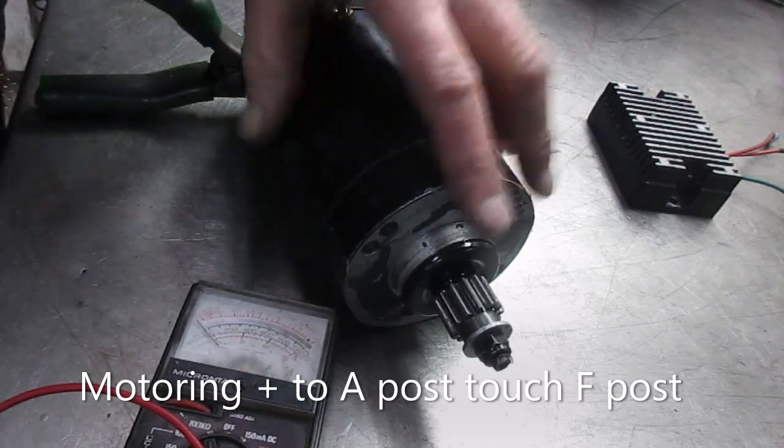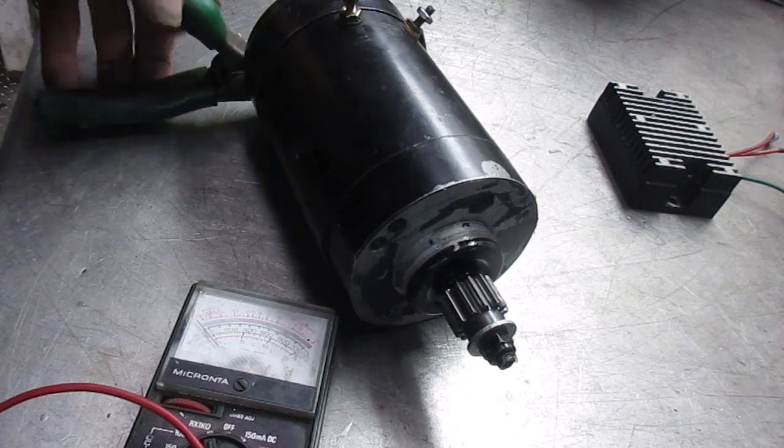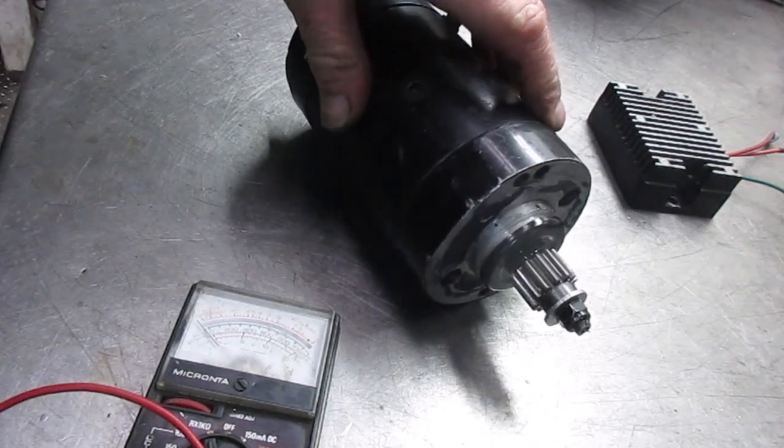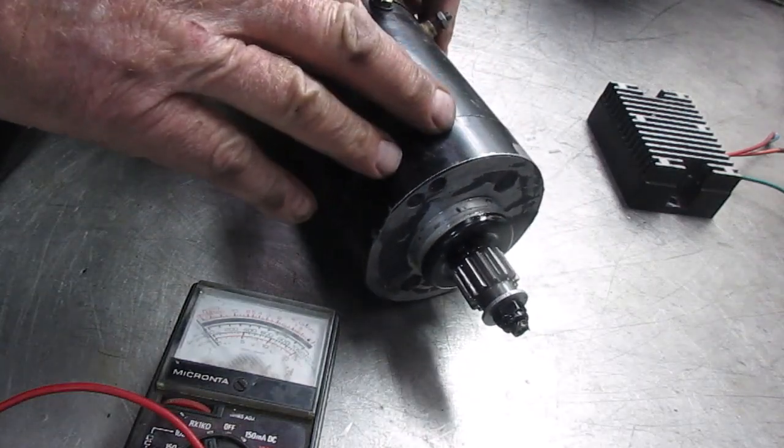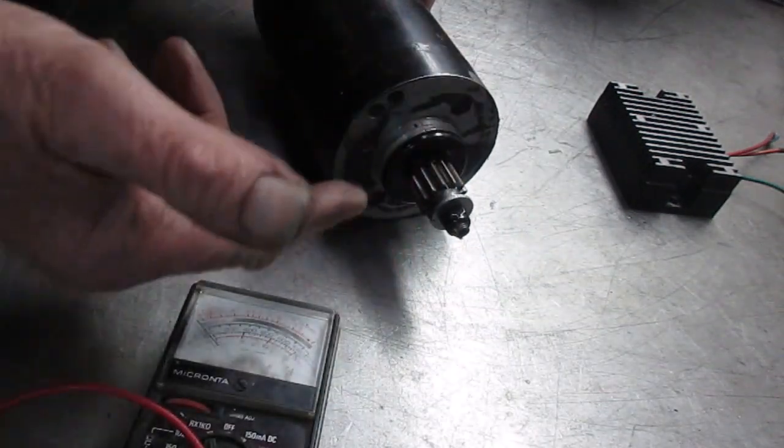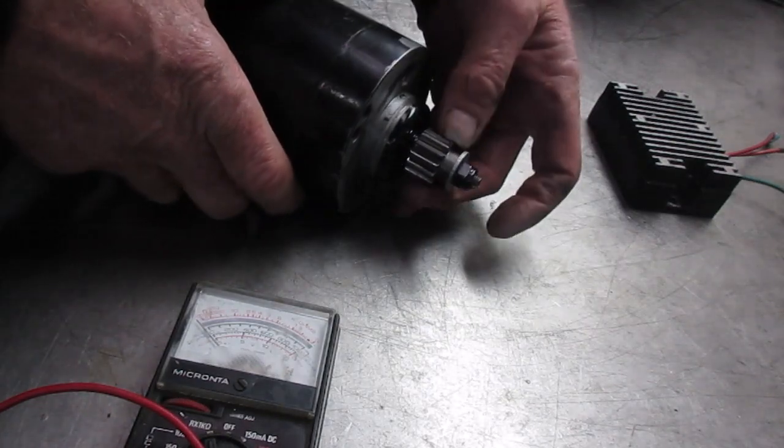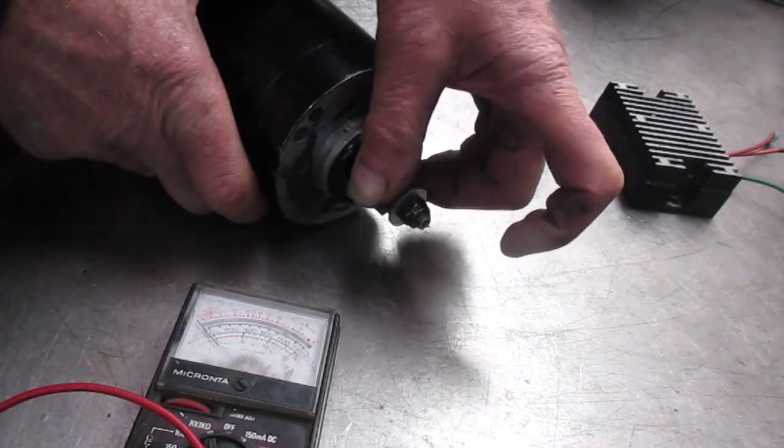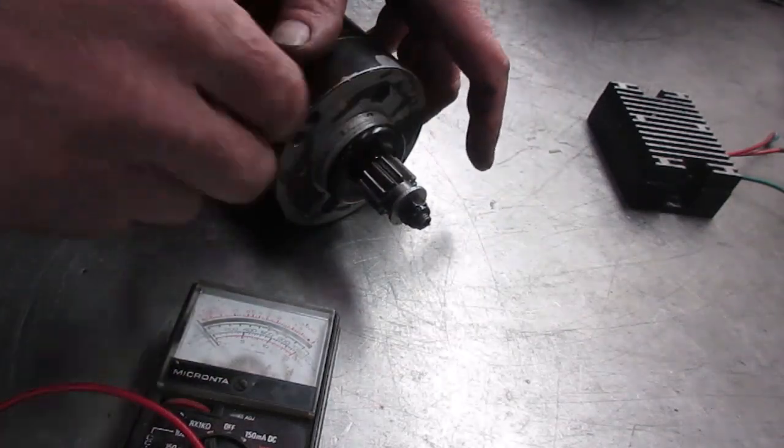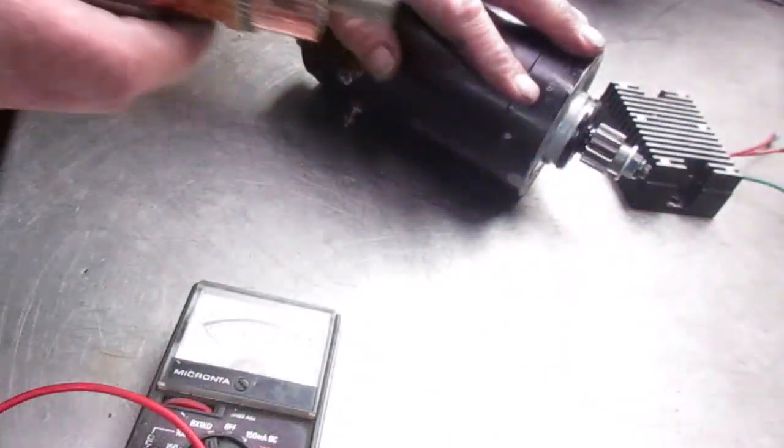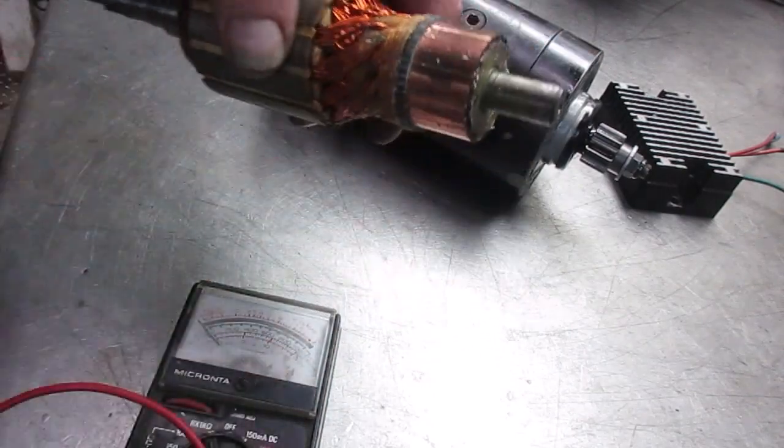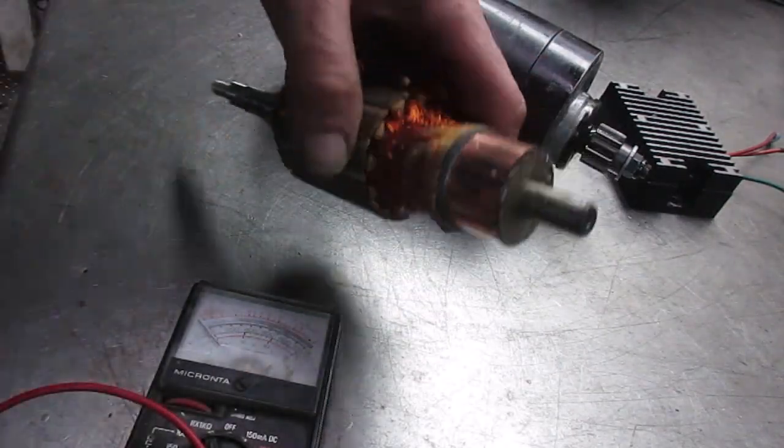This generator is working perfectly and that's how you would test it on the bench if you don't have the meter to check it on the motorcycle. If it's motoring, it should motor in the opposite direction that the motor will turn it. The motor will turn this thing counterclockwise. It's turning clockwise when it's motoring. 90% of the time I found that what goes wrong with these generators is the armature usually fails.